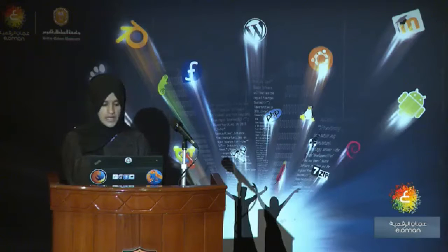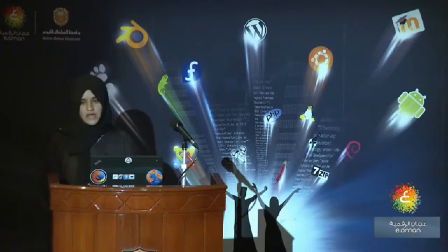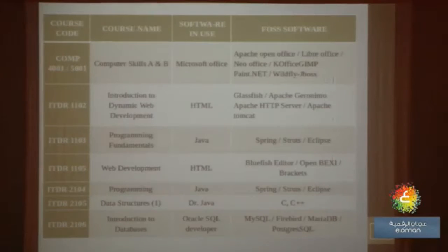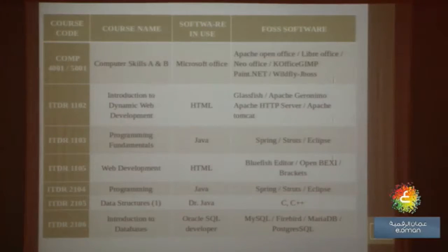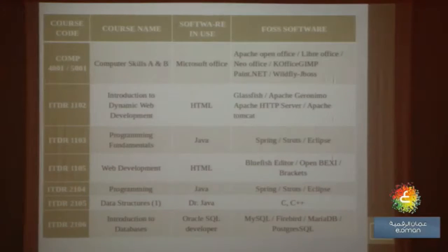These are the listed courses from the colleges. For example, for Computer Skills A and B we use Microsoft Office — instead, we can use Apache OpenOffice. For Introduction to Dynamic Web Development using HTML, we can use Glassfish or Apache HTTP server. For Programming Fundamentals using Java, we can use Eclipse. For Web Development using HTML, we can use Bluefish Editor. Many FOSS programs can replace commercial programs currently in use. You can refer to the full list in the paper — this is just a screenshot.